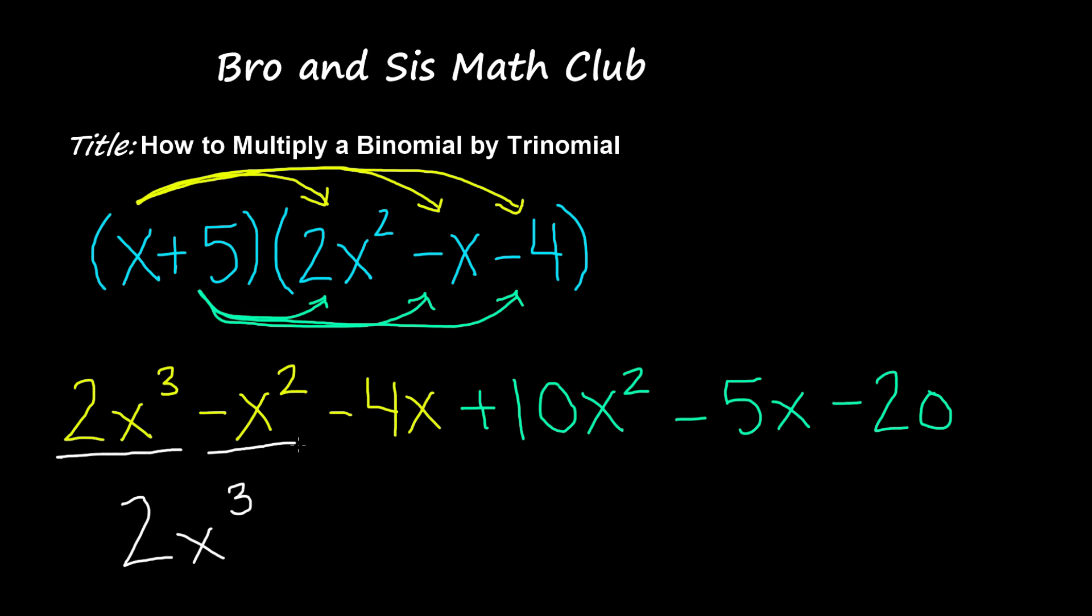And then we have negative x squared. Now we have to find a like term that has the same variable in the exponent which is x squared. So we have positive 10x squared. So when we combine positive 10x squared with negative x squared, we get positive 9x squared.